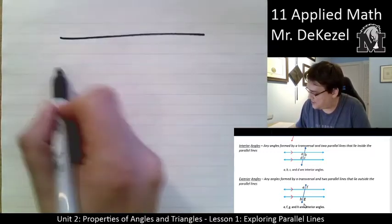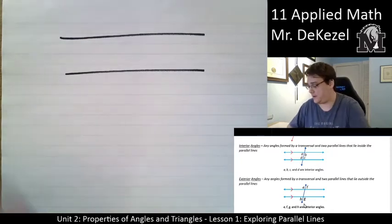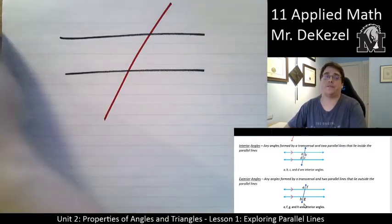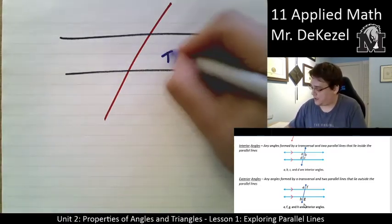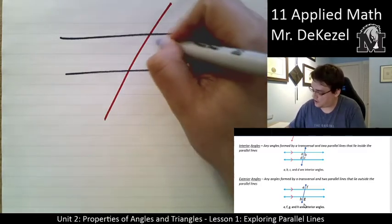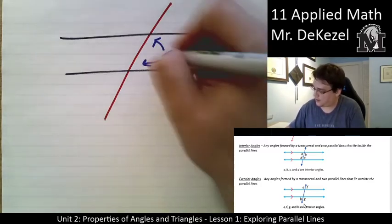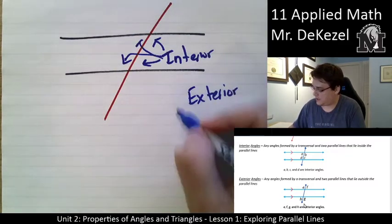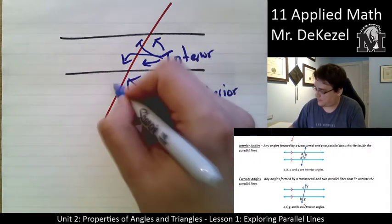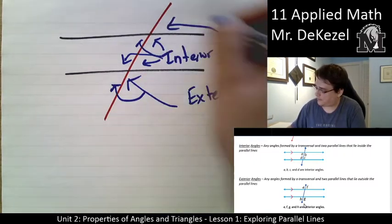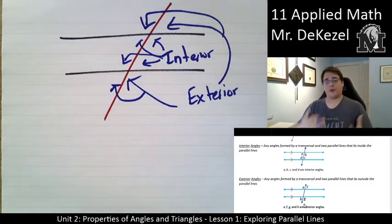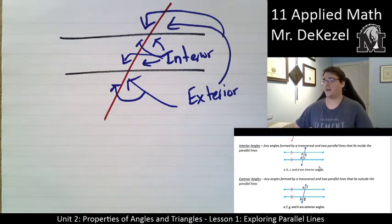Just imagine for a second that those are parallel lines, and we have our transversal crossing them. The angles between the parallel lines are going to be interior — I'll draw four of them there — and then exterior angles are on the outside, like that. So we have four interior angles and four exterior angles when a transversal crosses parallel lines.